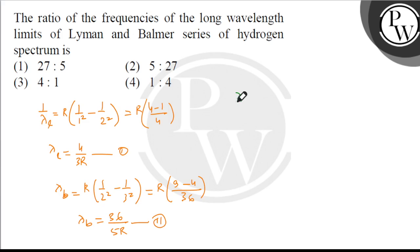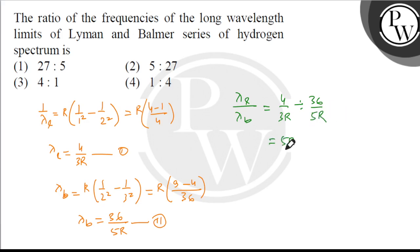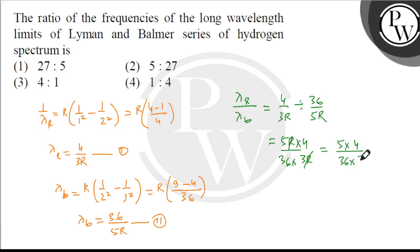So lambda_L upon lambda_B is equal to: (4/3R) divided by (36/5R), which is equal to (4/3R) into (5R/36). R se R cancel ho jaega. Jo bachega hamare paas: 4 into 5 upon 3 into 36, that is 20/108, which simplifies to 5 upon 27. Answer ho gaya.